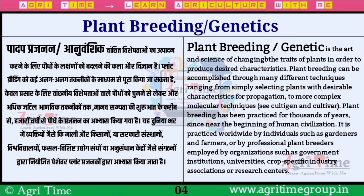पहले agriculture branch के बारे में — इसमें है पादप प्रजनन, या कहें तो Plant Breeding या Genetics। पादप प्रजनन, वांछित विशेषताओं का उत्पादन करने के लिए पौधों के लक्षणों को बदलने की कला और विज्ञान है — यानि Art and Science है।